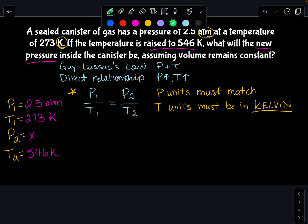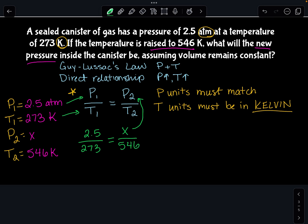The easiest way to solve this equation is to go ahead and plug these values directly into the equation that we wrote at the top. So that would mean I have 2.5 on top, 273 on bottom, and I'm going to set that equal to X because I don't know what my P2 is. So X is P2 and 546 on bottom.